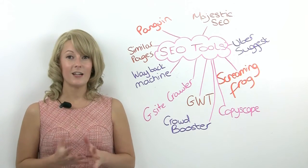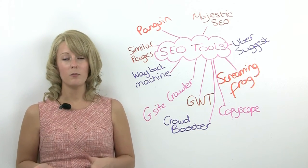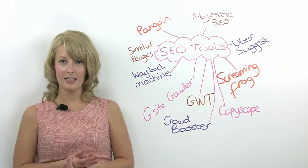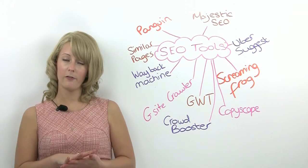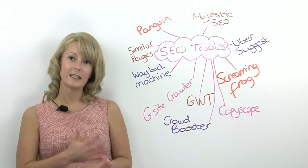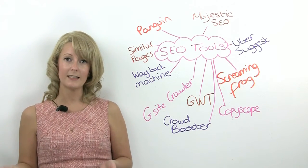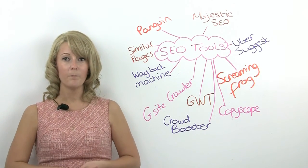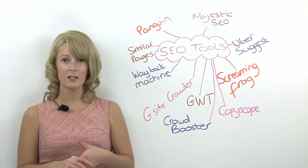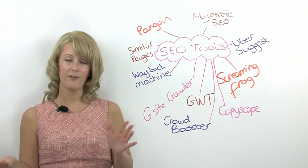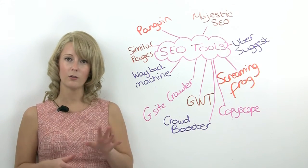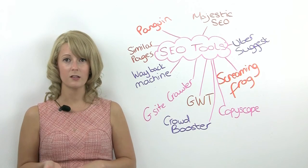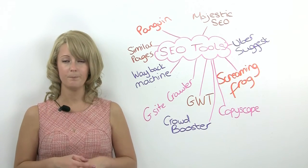Penguin is a fantastic tool at the moment. It accesses Google Analytics from your profile and overlays recent algorithm updates against your traffic. So if you've had a huge drop in traffic and there's an algorithm update just before, it could be that that's something causing the issue.